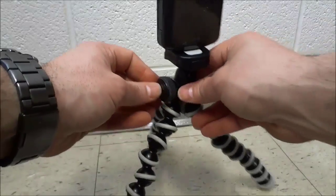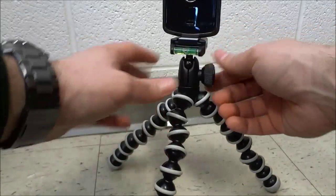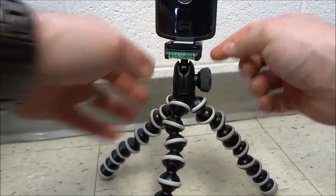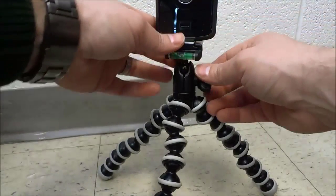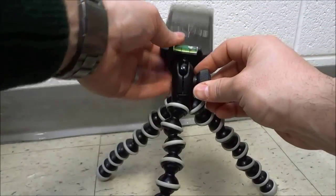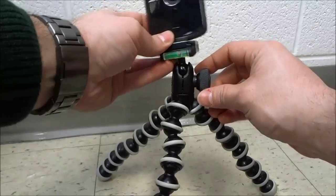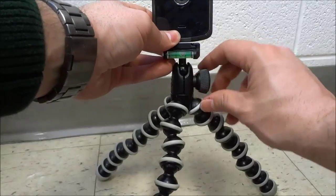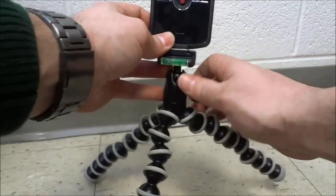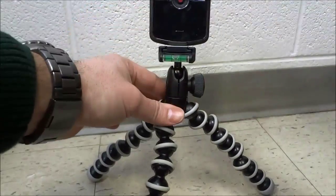If you take a look right here, there's this little wheel, and this locks and unlocks the top portion. You can see that I can unlock it, move this around, and then when I have a specific angle that I want, I can tighten it up just like that and it will no longer move.